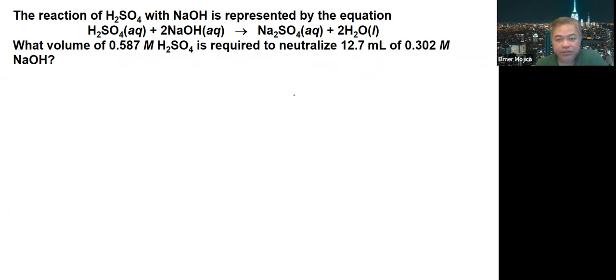First thing we're going to do is get the number of moles. We can get it with the NaOH because you're given the molarity, which is 0.302 moles per liter.